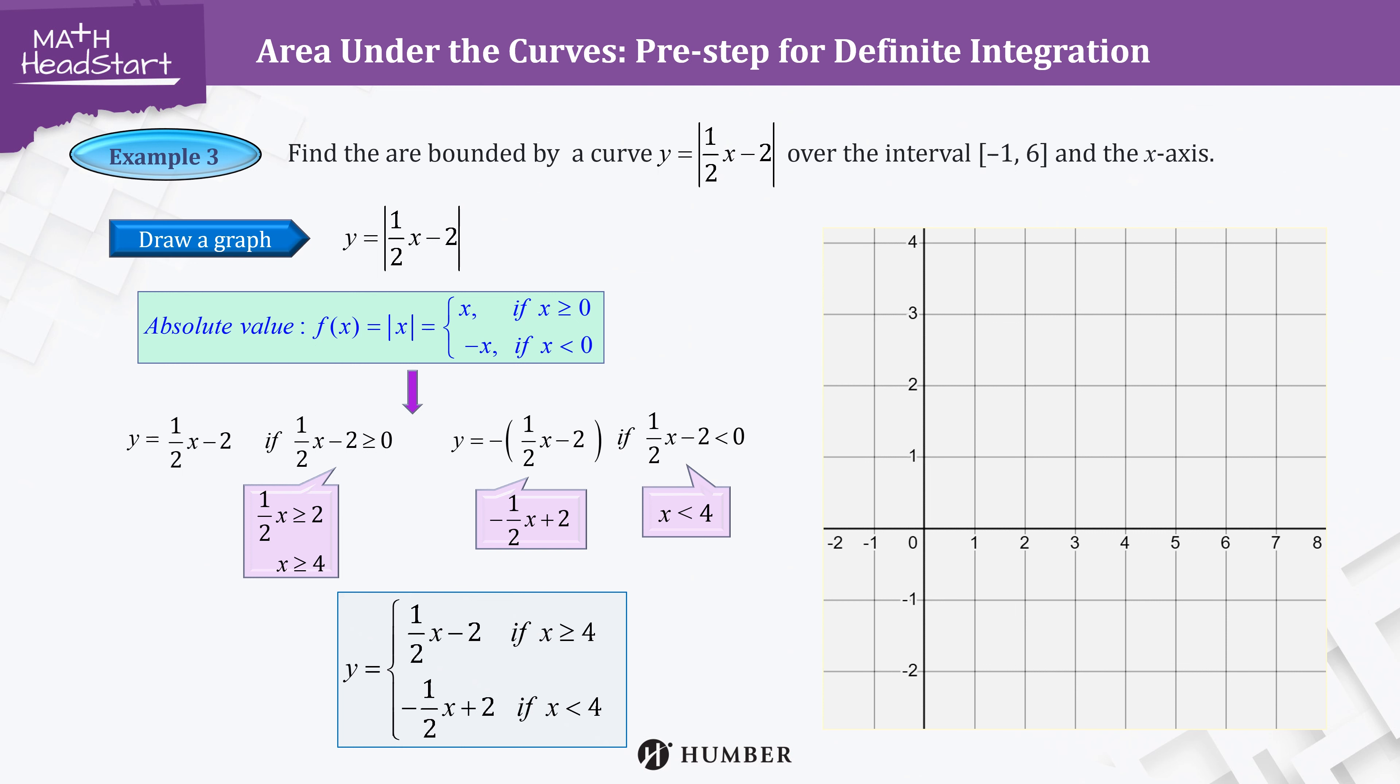Start with the first one. We draw a line without considering the domain first. Plot the y-intercept, -2, and plot another point by making use of the slope, 1/2. Then connect the two points to draw a graph. However, this graph should be the domain after 4, so this is the correct line.